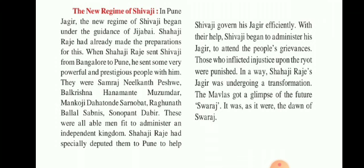With their help, Shivaji began to administer his Jagir and attend to the people's grievances — grievances means complaints, their problems. Those who inflicted injustice upon the righteous were punished. In a way, Shahaji Raje's Jagir was undergoing a transformation — transformation means change. The Mavalas got a glimpse — ek jhalak — of the future Swaraj. It was, as it were, the dawn of Swaraj — a new morning, a new beginning of Swaraj.